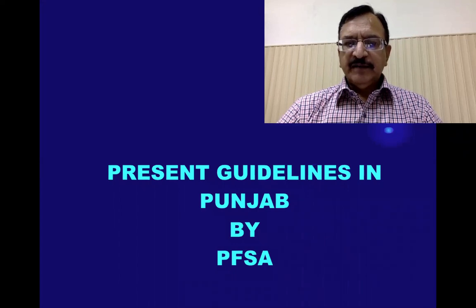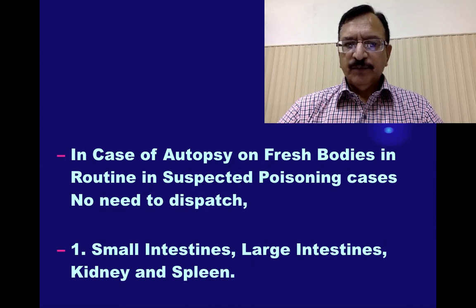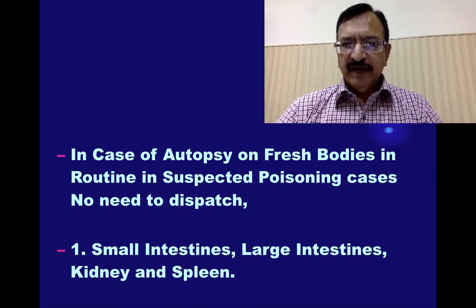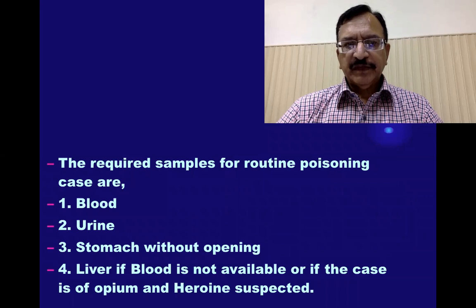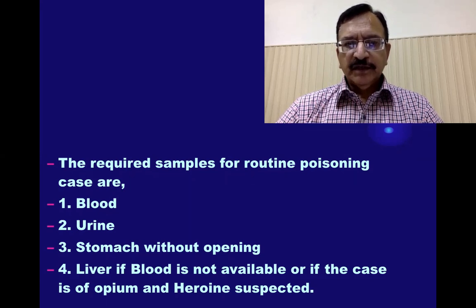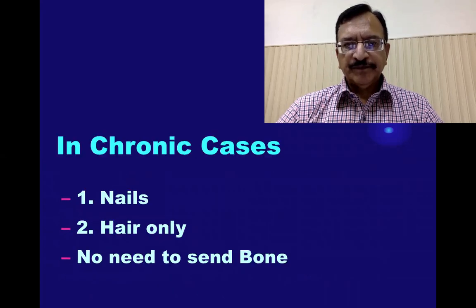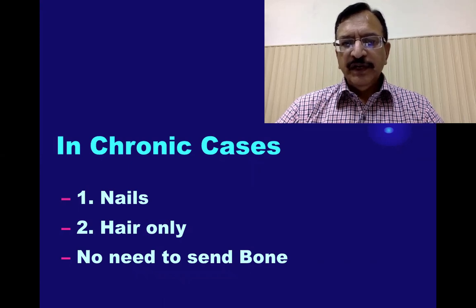The present guideline by PFSA in Punjab is: in cases of autopsy on fresh bodies in routine suspected poisoning cases, there is no need to dispatch small intestine, large intestine, kidney, or spleen. The required samples for routine poisoning cases are blood, urine, stomach without opening, and liver — if blood is not available or if the case involves opium or heroin suspicion of poisoning. In chronic poisoning cases, nail and hair only; no need to send bone.